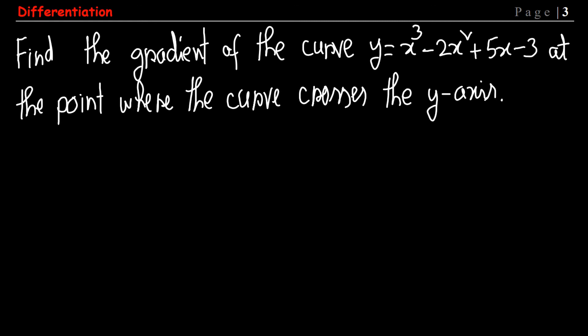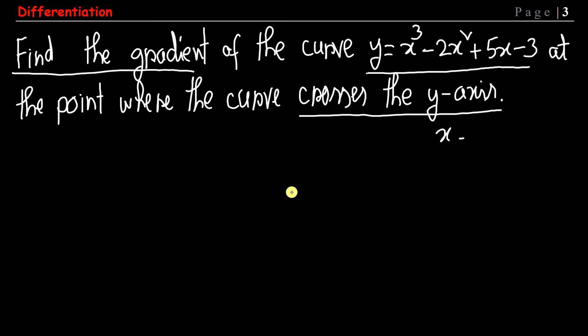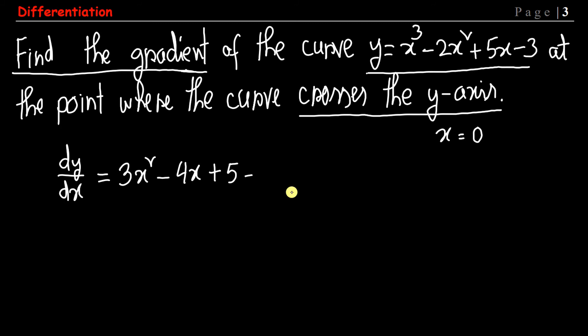The next question: find the gradient of the curve at the point where the curve crosses the y-axis. When a curve crosses the y-axis, x equals 0. We differentiate the given y expression to get dy/dx equals 3x squared minus 4x plus 5. The constant term differentiates to 0, so we have 3x squared minus 4x plus 5.